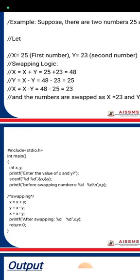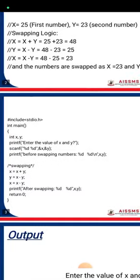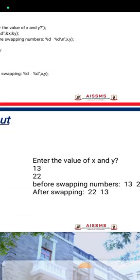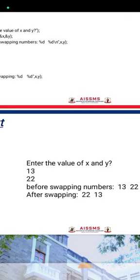The value is now swapped: x = 23 and y = 25, as seen in the previous example. In the output, suppose we enter x = 30 and y = 22. Before swapping, the values are x = 30 and y = 22. After applying the swapping logic, the output displays x = 22 and y = 13 — the values are exchanged.